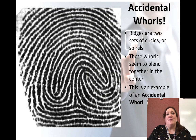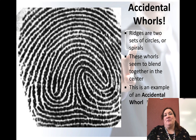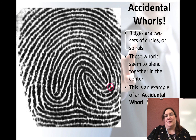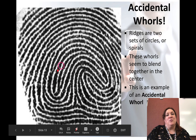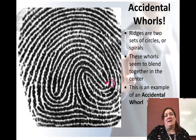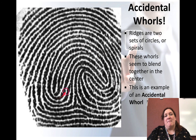There are also accidental whorls. These have two sets of circles or spirals that seem to blend together in the center — it kind of looks like a mushroom shape. That's why there's a mushroom picture: accidental whorls form more of a mushroom shape in the center.